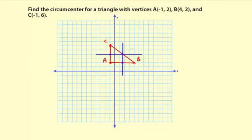So this is actually all set. So the circumcenter is the point of intersection here, which looks like it's 1.5 and then 4 up.